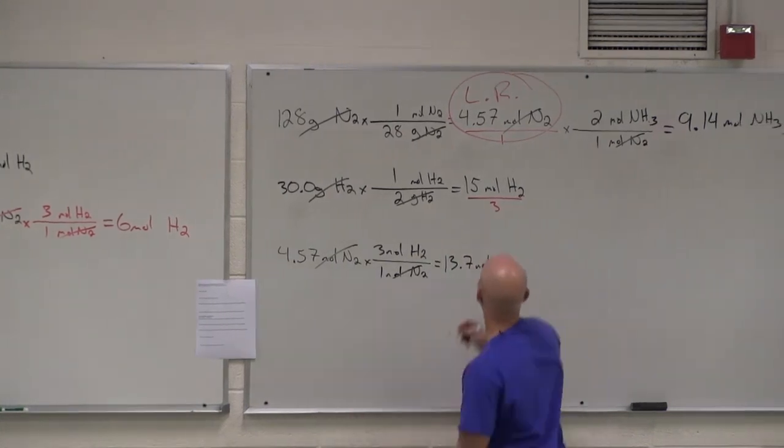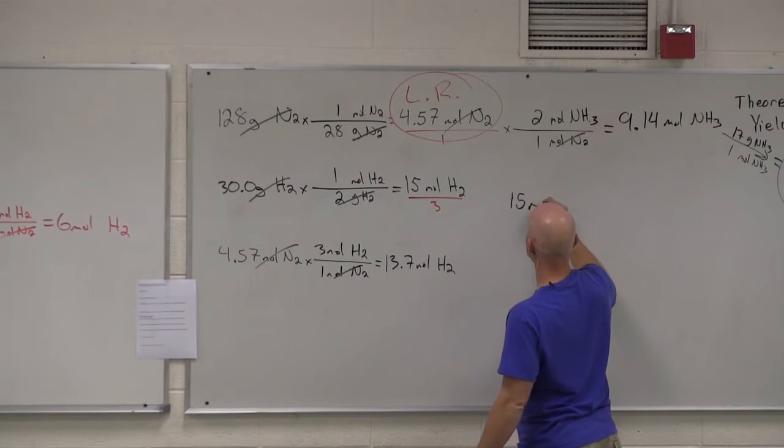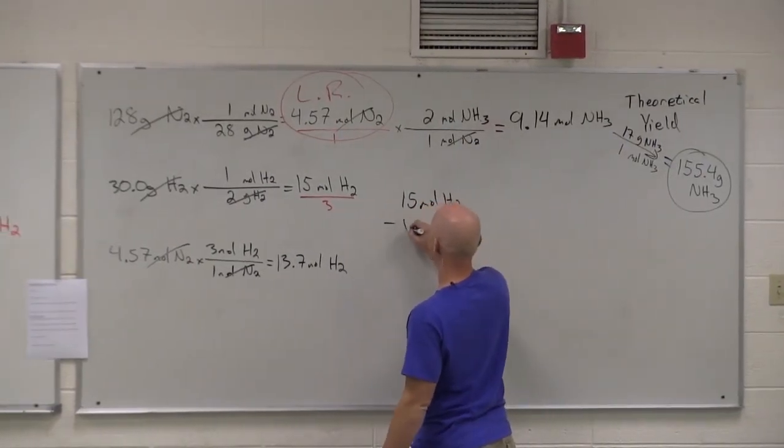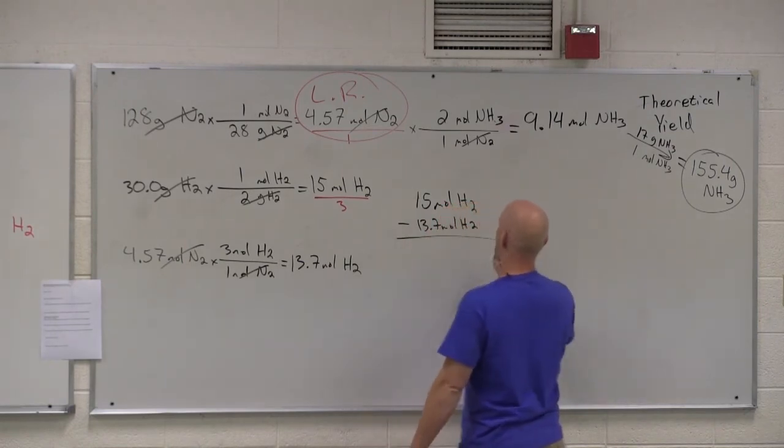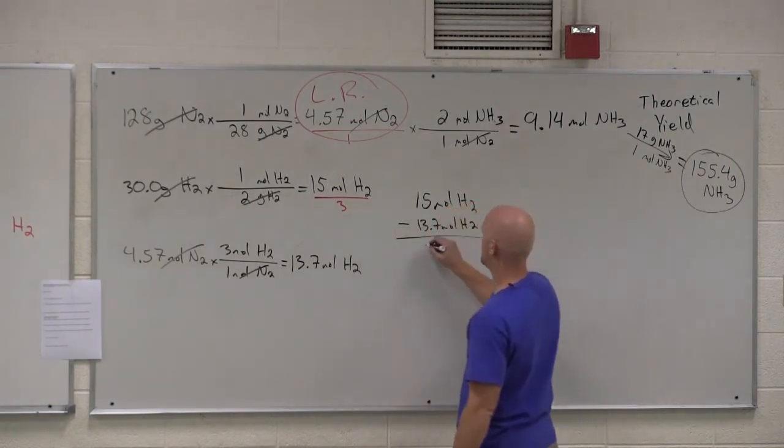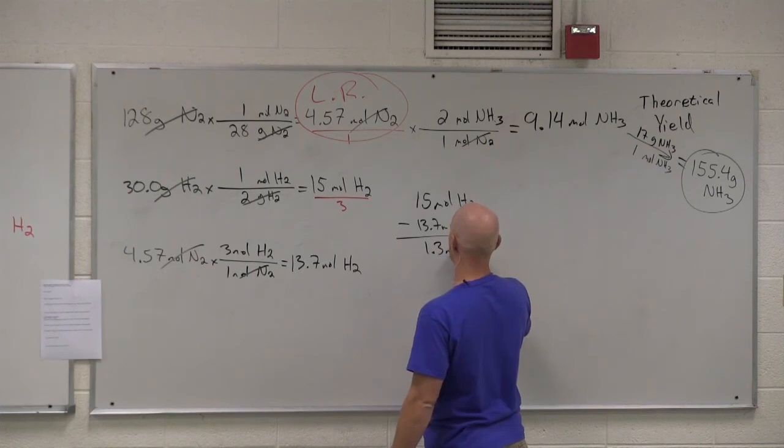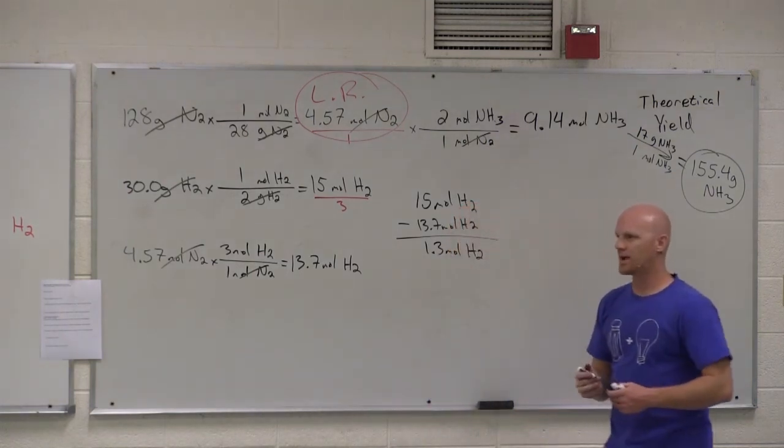So, what we see here is that we started out with 15 moles of H2. We are going to use up 13.7 moles. And so, how many do we have left? 1.3 moles. And that is the number of moles we have left in excess.